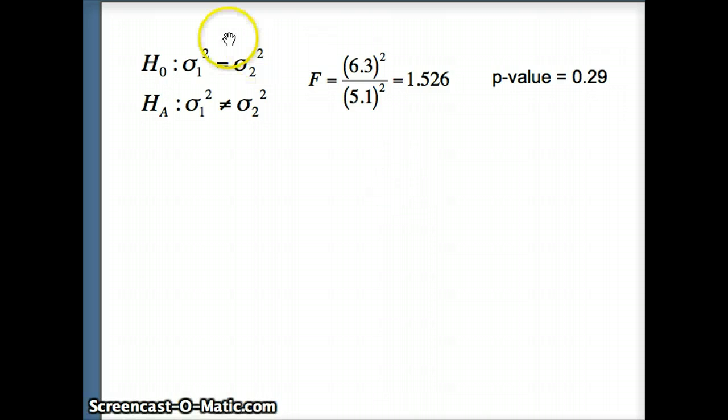So we have our H0, our HA, our test statistic, and our P value. And since the P value is large, we fail to reject H0. So the likelihood of getting samples with variances this different just by random chance is 29%, which is high, which means it is possible that what we assume to be true, that the variances are the same, indeed is reasonable. That doesn't mean it is true. It means we have to hold on to it as being tenable, being possible.